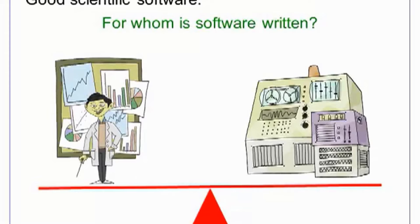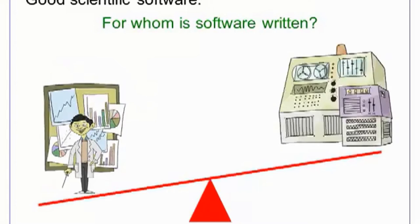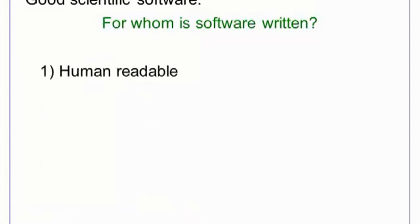Probably the most important aspect of good software is that it is written for humans rather than machines. Humans are the ones who have to understand, critique, and debug software, and your task as a programmer is to make it easier on your fellow programmers. Software written for humans is, first of all, written in a readable format. The structure and purpose of code should be obvious.